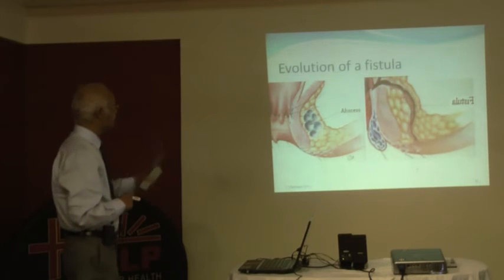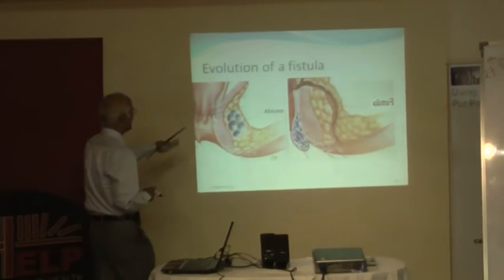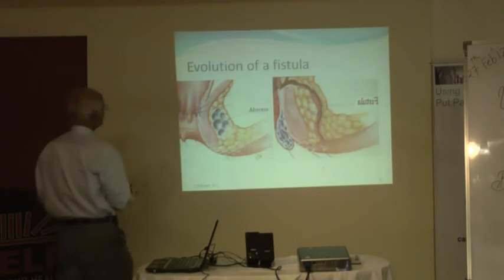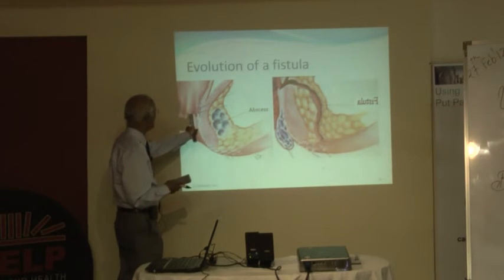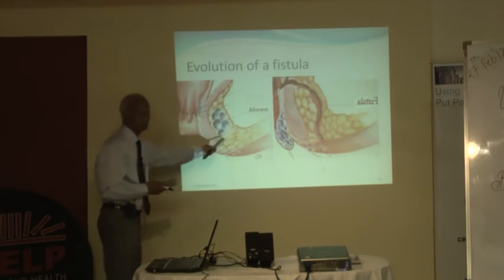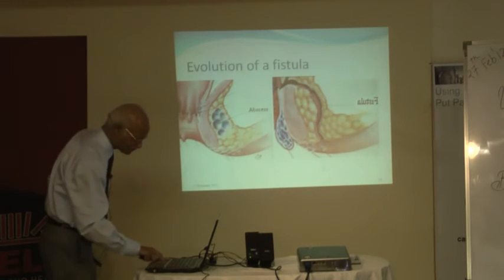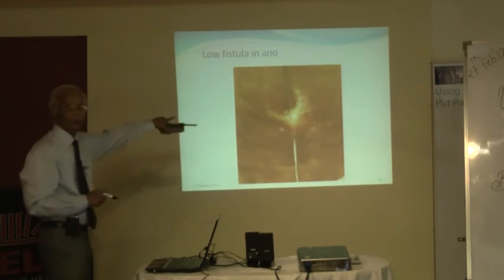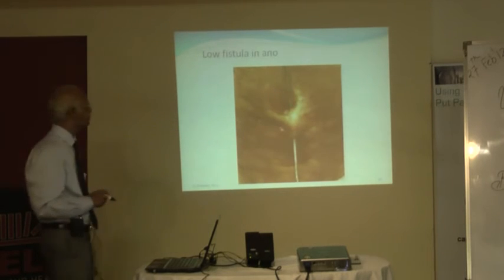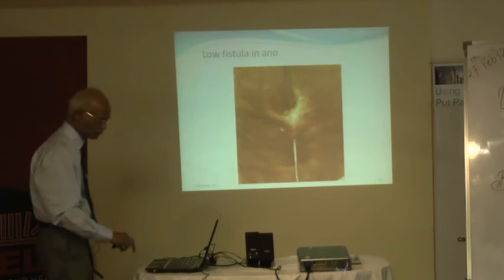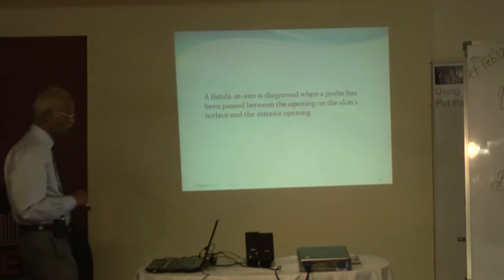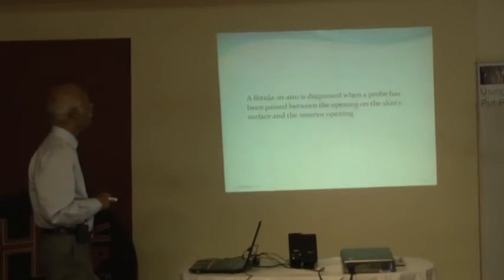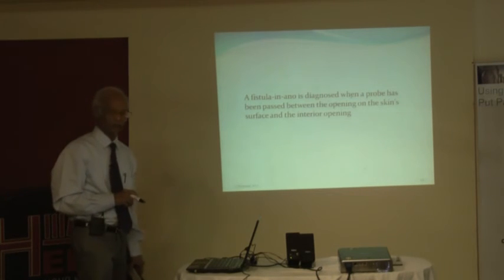This is what we are looking at — the evolution of a fistula. This is the perianal region where an abscess has formed, and this abscess keeps on burrowing itself. The infection has started from the anal crypt and burrows to form a tract. This shows the connection between the external opening and the internal opening of the fistula tract — it is a low fistula in ano. A fistula in ano is diagnosed when a probe has been passed between the opening on the skin surface and the interior opening.